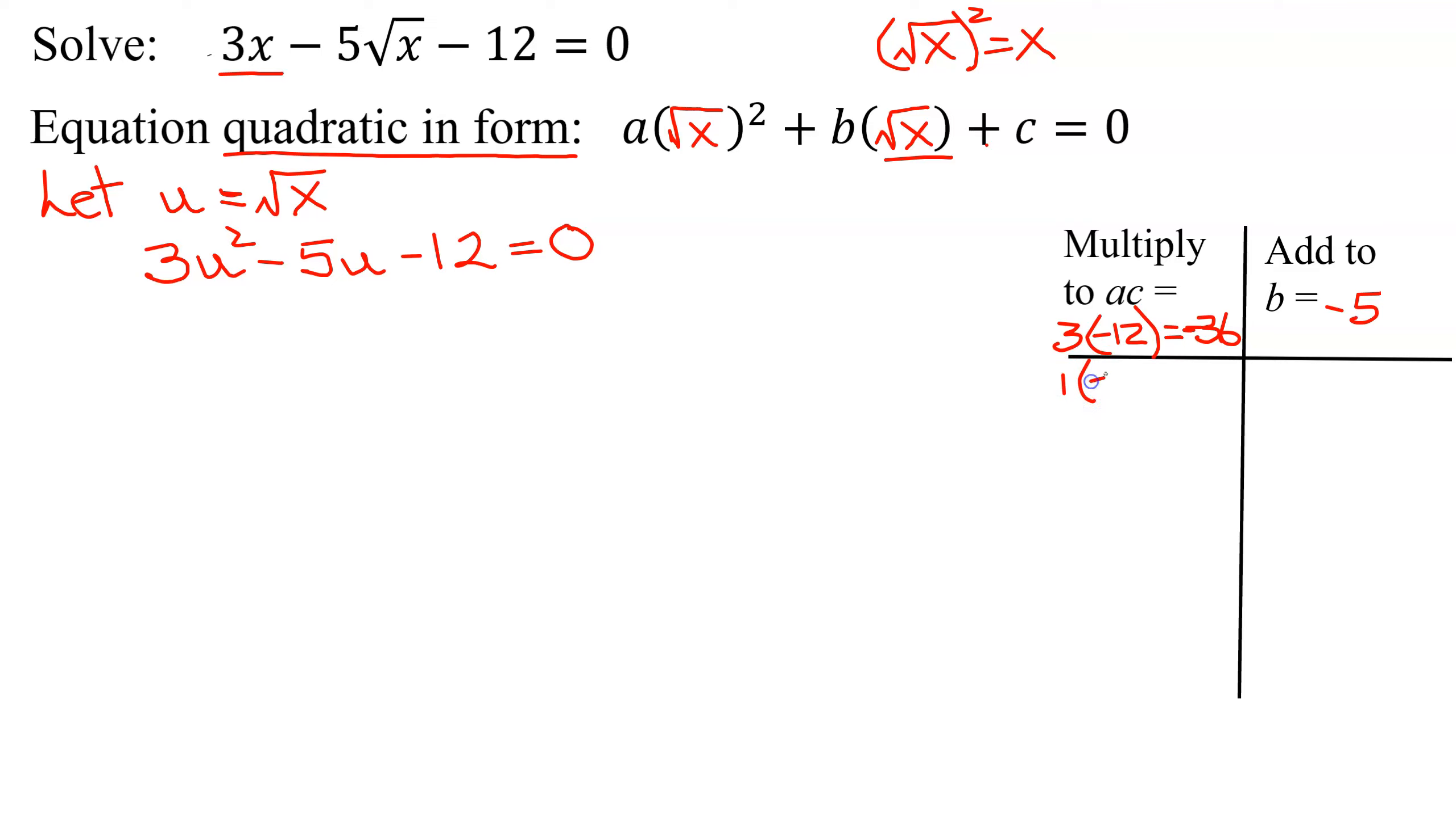So I could have 1 and negative 36 that multiply to negative 36, but what does 1 plus negative 36 add to? Negative 35. Not the number I'm looking for.